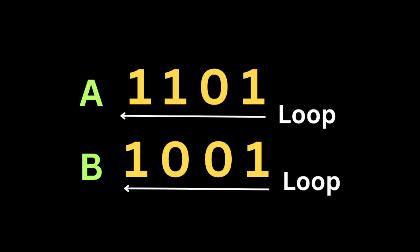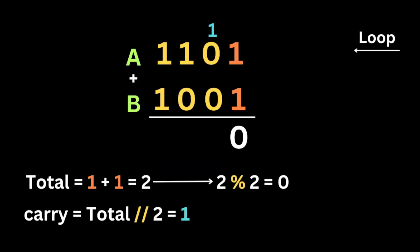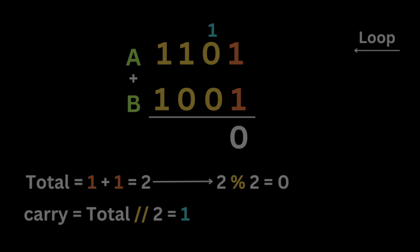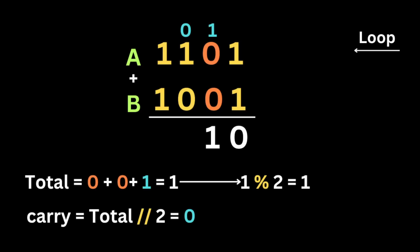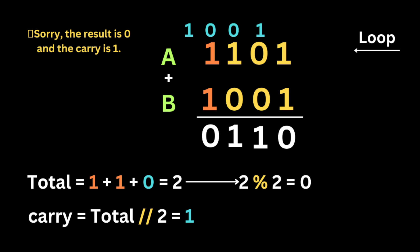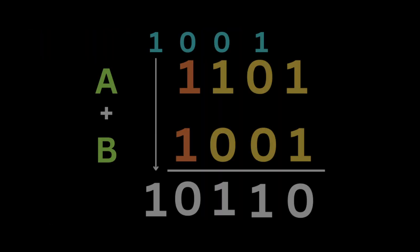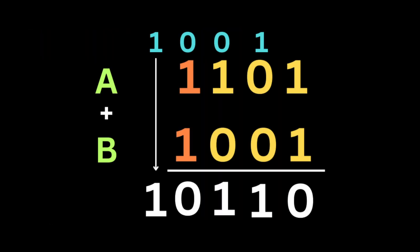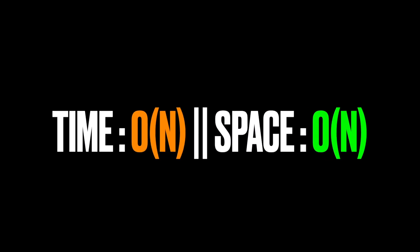Let's take an example: a equals '1101' and b equals '1001.' We loop through both strings in reversed order. First, 1 plus 1 gives sum zero with a carry of one. Next, 0 plus 0 plus carry 1 gives sum one with carry zero. Then 1 plus 0 plus carry 0 gives sum one with carry zero. Finally, 1 plus 1 plus carry 0 gives sum zero with carry one. The final result is '10110'.